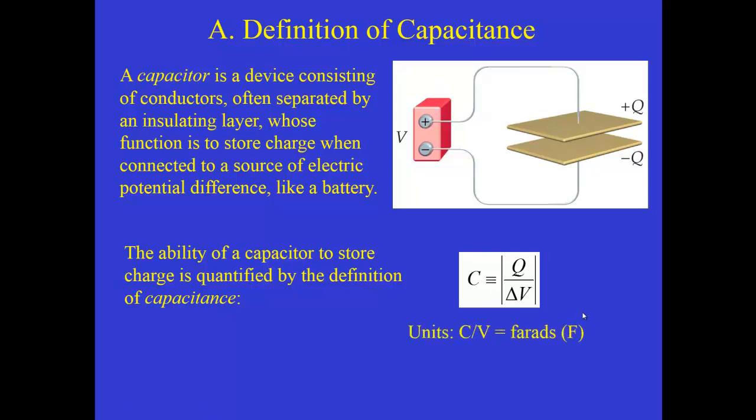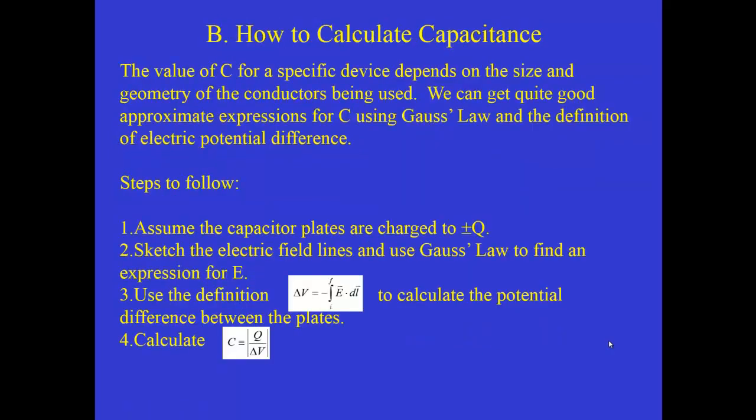The units of course if charge is in coulombs and potential difference is in volts then a coulomb per volt is the unit for capacitance. We give that a special name in honor of Michael Faraday we call that the farad. But it's important to realize that a farad is a really large value for capacitance and the kinds of capacitors that you might find on an integrated circuit board inside some kind of electronic device often have values of capacitance that are microfarads or even nanofarads in some cases.